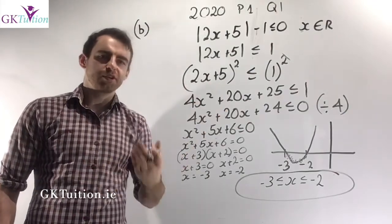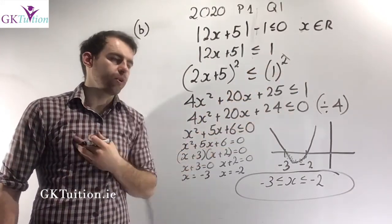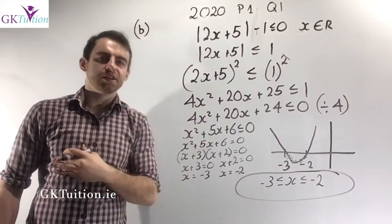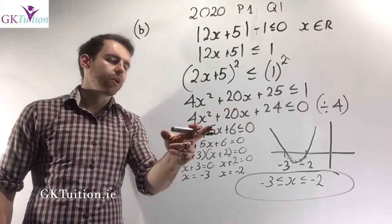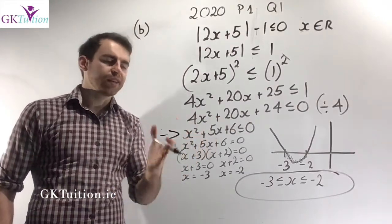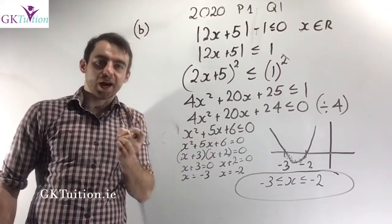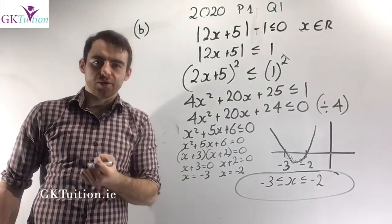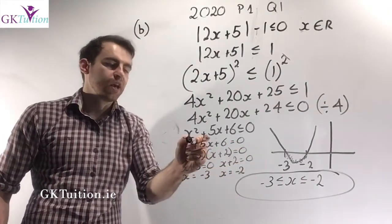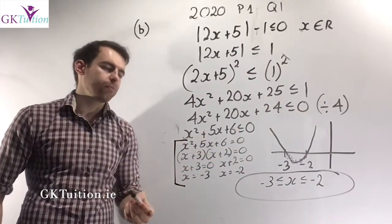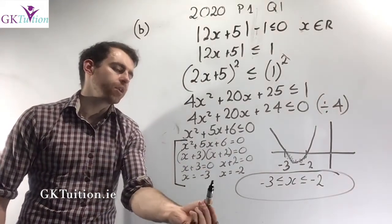Squaring the left-hand side removes the modulus signs. Multiplying 2x plus 5 by 2x plus 5 gives 4x squared plus 20x plus 25. Squaring 1 gives 1. Bringing the 1 across gives the quadratic 4x squared plus 20x plus 24, which simplifies to x squared plus 5x plus 6. So I need to investigate when this quadratic is less than or equal to 0. To sketch the curve, I find the roots by setting it equal to 0, factorizing and solving, giving x equals minus 3 and x equals minus 2.